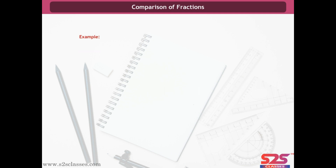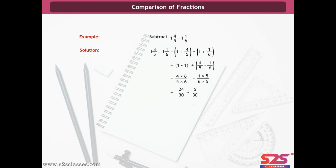Example: Subtract 1 and 4/5 minus 1 and 1/6. As seen in the animation, by subtracting 1 and 4/5 minus 1 and 1/6, we get 19/30.